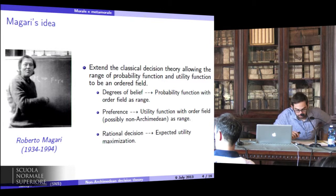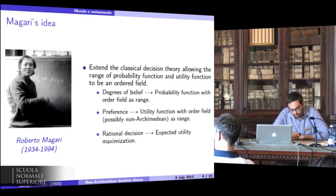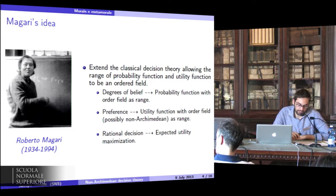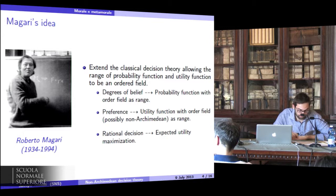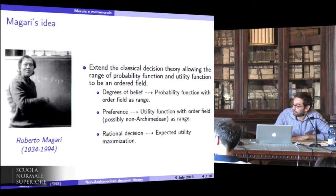Intuitively, a non-Archimedean field is an algebraic structure in which we can express the infinity of some quantities. In this field, we have, in fact, infinitely small numbers and infinitely large numbers. Let's see the formal definition of the non-Archimedean field.